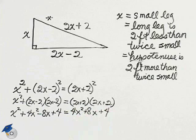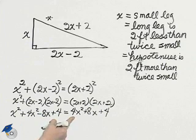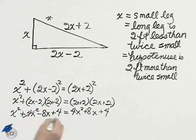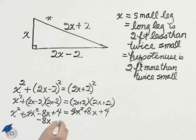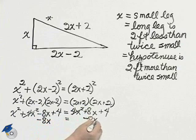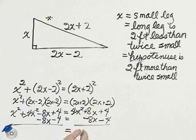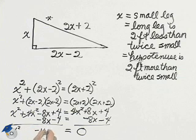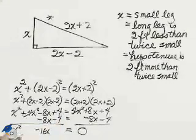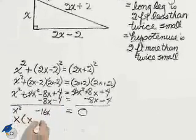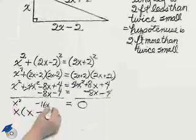When an equation is of degree two or more, set it to zero. As I subtract four x squared from four x squared, those subtract away. I must be careful as I subtract eight x from both sides and subtract four from both sides. I have x squared minus 16x equals zero, because four minus four made zero. Factoring out the common factor of x: x times (x minus 16) equals zero.